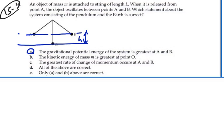Let's look at B. The kinetic energy of mass M is greatest at point O. That's our equilibrium position, where all the potential energy has been transferred into kinetic energy. We have our greatest speed at that point, and hence our greatest kinetic energy. So that is definitely a true statement as well.